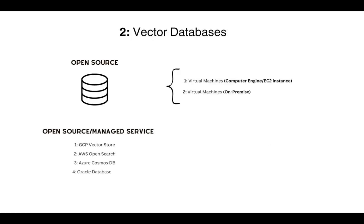Next, coming to vector databases — be it on-premise or on cloud — you will have to install the database manually if you're going for an open-source vector database, either on a virtual machine like EC2 or Compute Engine, or on your on-premise compute node. If you are on cloud, you could use one of the managed vector databases as a service offering. For example, Google Cloud has a managed vector store, AWS has OpenSearch as a vector database, Azure has Cosmos DB, and if you're on Oracle Cloud, Oracle supports vector as a data type, meaning you can store vector embeddings in your existing Oracle table.